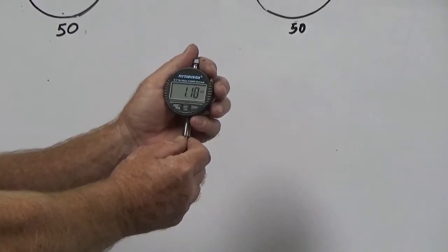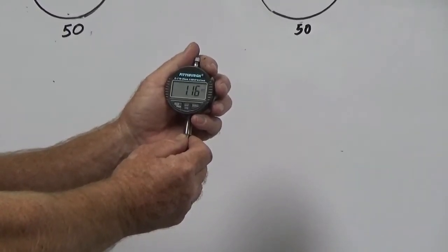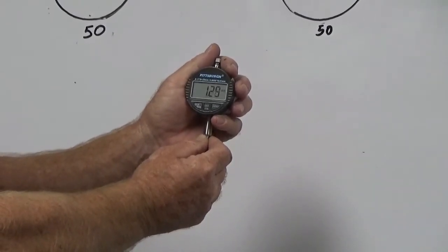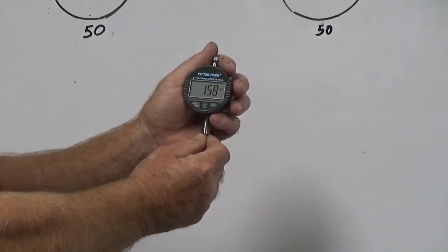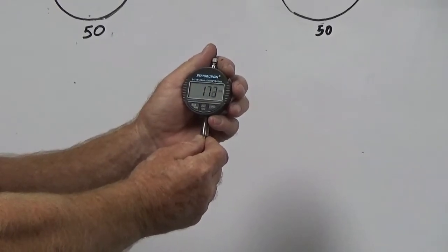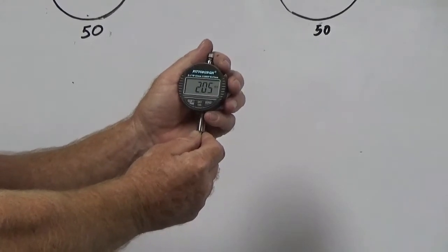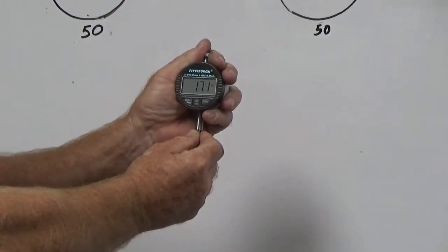Now I have 1.15, so that is 115 thousandths. Let's just keep pushing the plunger up. There's 1.59, 8, 2.05, 205 thousandths.